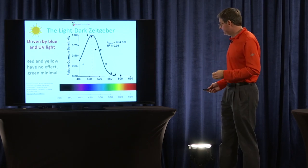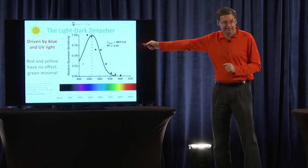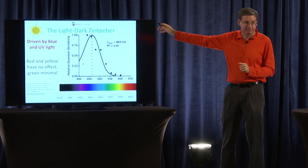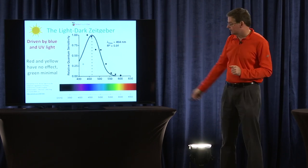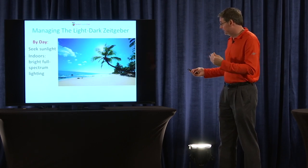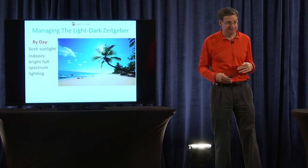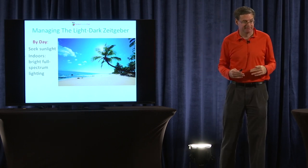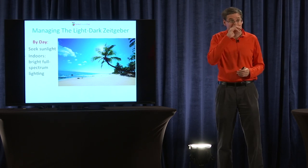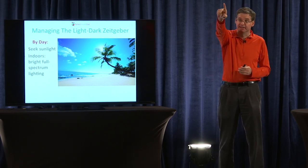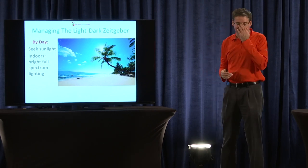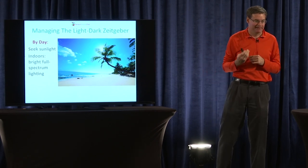Okay, but in the daytime, you really need all this blue light. So whenever you're exposed to blue light, it's telling your body it's daytime. So by day, you need to get sunlight. And when you're indoors during the day, you need to expose yourself to bright, full-spectrum lighting. Now, what kind of lighting do people actually buy? If you look at these lights, you'll see they have a yellowish tinge to them. And that's the worst possible kind of lighting to buy.